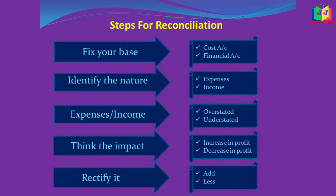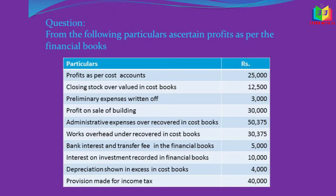The third step is to find whether the expenses were overstated or understated. The fourth step is to find the impact of this overstated or understated expenses and income — that is, the impact on profit. The fifth step is to rectify it by adding or subtracting. Now we'll see one problem.